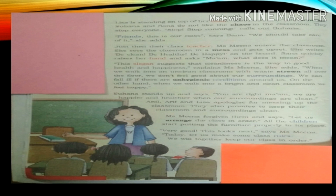Miss Mina forgives Anil, Arif and Lisa after they apologize and promise to keep the classroom and surroundings clean. She adds, 'Let us arrange the classroom in order.' All the children start putting the furniture properly in its place. When the class is arranged, Miss Mina says, 'Very good! Now the classroom looks really neat.' Then she adds, 'Today, let us make some class rules. The first classroom rule is: we will together keep our class in order.' This was the first chapter: Back to School.